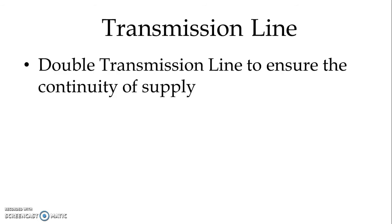During healthy condition, both the transmission lines carry half of the full load current, but in case of a fault, any one of the lines has to carry the full load current.